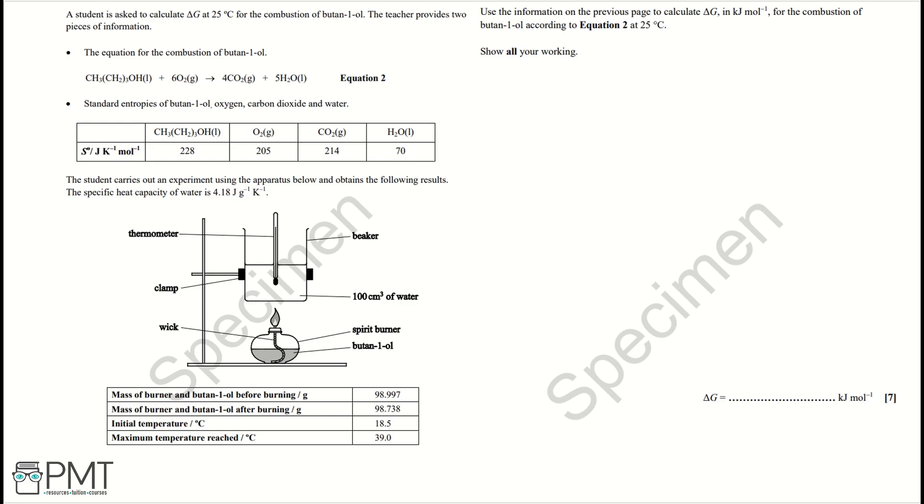The specific heat capacity of water is 4.18 joules per gram per kelvin. Use the information on the previous page to calculate delta G in kilojoules per mole for the combustion of butan-1-ol according to equation 2 at 25 degrees Celsius. Show all your working.